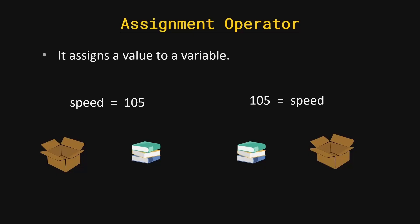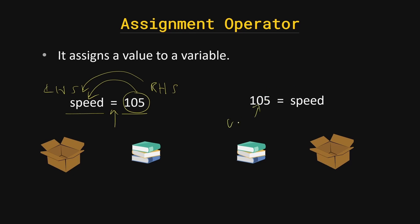Now let's talk about what the assignment operator does — it assigns a value to a variable. Let's say you have a variable called 'speed' and a value of 105. The equal sign takes 105 and puts it into the 'speed' variable. The assignment operator takes the value from the right-hand side and puts it into the left-hand side variable.